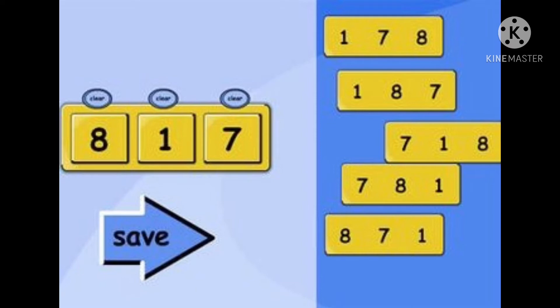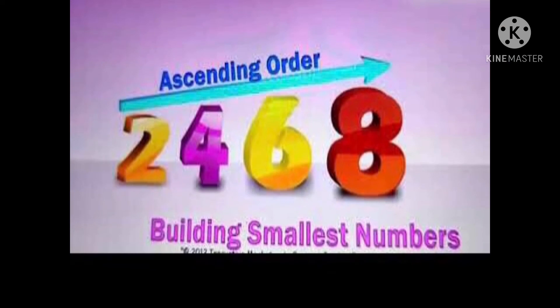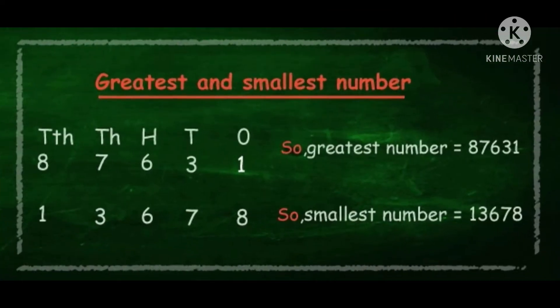So now how to make greatest and smallest number? Write the digits in ascending order if you want to make smallest numbers by using these digits, and write the digits in descending order if you want to make greatest number. Now as we have digits 8, 7, 6, 3, and 1.